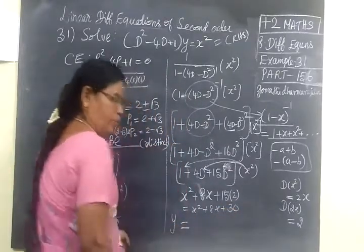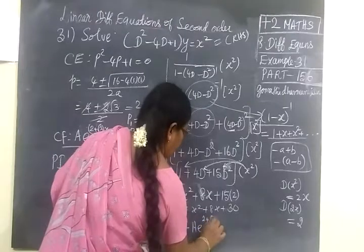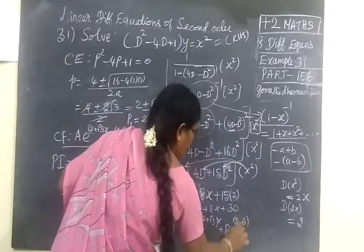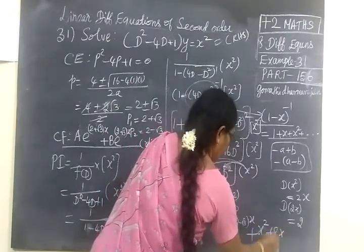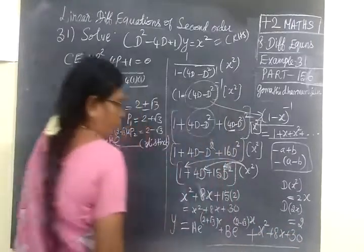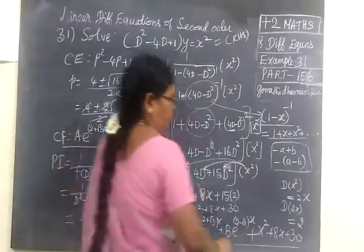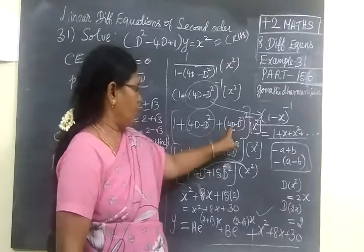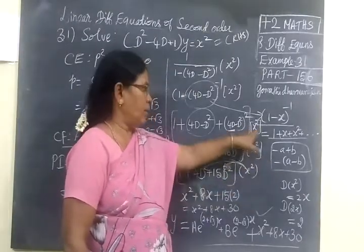So now the general solution is: Y equals the complementary function plus the particular integral, that is Y = A·e^((2 + root 3)x) + B·e^((2 − root 3)x) + x squared + 8x + 13. This is a very simple sum. When you write 1 plus 4D minus D squared, then expand 16D squared, combine D squared terms, and differentiate x squared twice, you get the final answer.